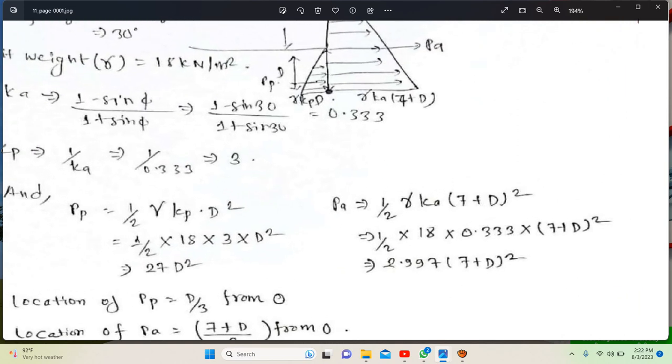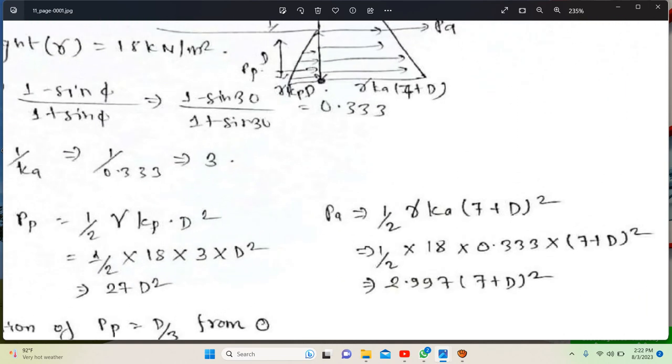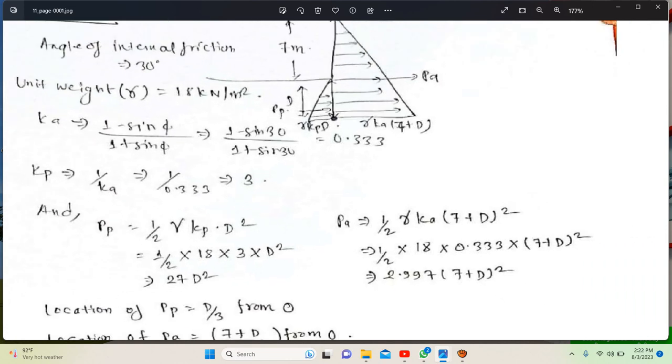PP equals half gamma K into d squared equals half times 18 times K value, which is 2.997 times d squared equals 26.97 times d squared.